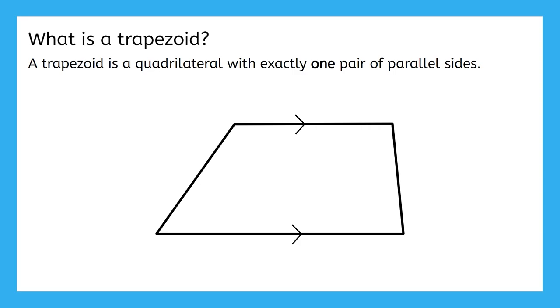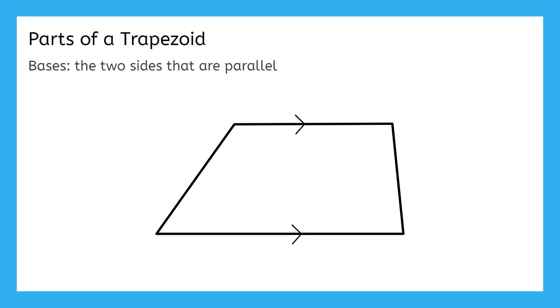Trapezoids also have parts with specific names. The two parallel sides are called bases. That means that these two sides would each be considered a base. The two sides that are not parallel are called legs. So, these would be the legs in this particular trapezoid. You may remember that we've also used the term leg before in right triangles. Leg means something a little different in each of these contexts, so make sure that whenever you see it, you carefully consider the full context before you jump to any conclusions.